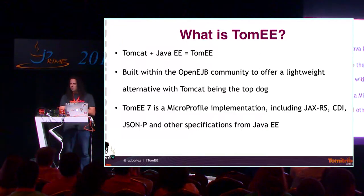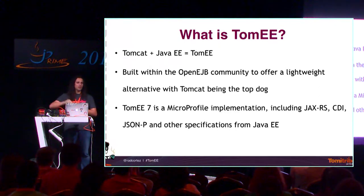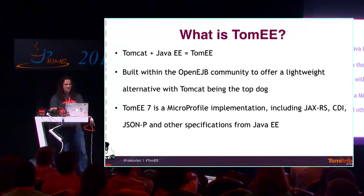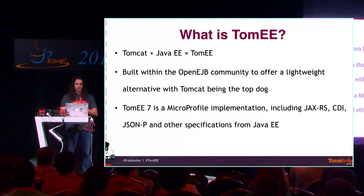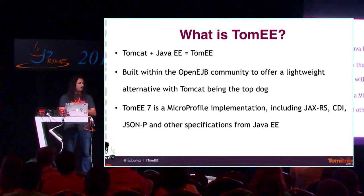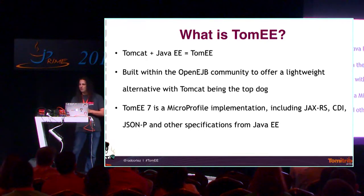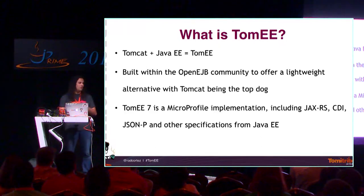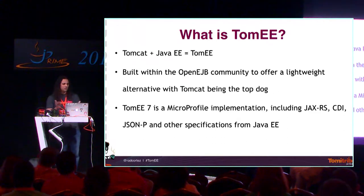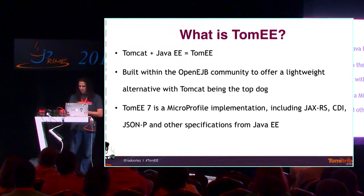TomEE is the server we're going to run this on. TomEE is actually Tomcat combined with Java EE. It was built within the OpenEJB community to offer a lightweight alternative to Tomcat and provide a Java EE implementation. TomEE implements the MicroProfile specification, including JAX-RS, CDI, and JSON-P, plus all other Java EE specifications. If you want something for MicroProfile, you can use TomEE or any of the other supported servers.